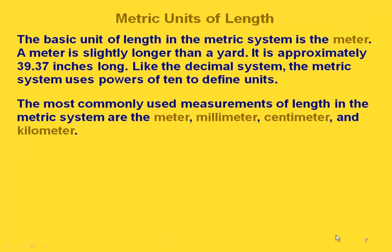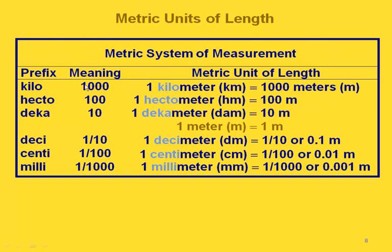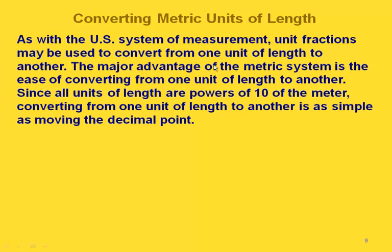Now let's talk about the metric system. The basic unit of length in the metric system is the meter — a meter is just a little longer than a yard. A yard is 36 inches and a meter is approximately 39.37 inches. Just like the decimal system, the metric system uses powers of 10 to define units. The most common metric units for length are the meter, millimeter, centimeter, and kilometer. We can use unit fractions to convert, but there's an easier way since we have powers of 10 — we can just move the decimal point.